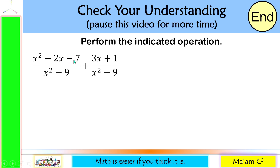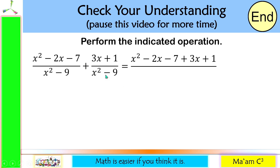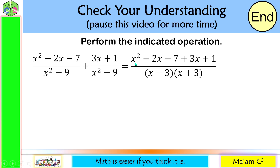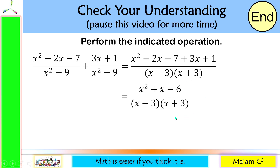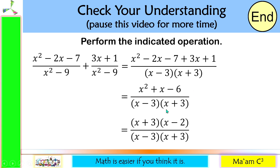We have (x² minus 2x minus 7) over (x² minus 9) plus (3x + 1) over (x² minus 9). Let us add our numerators, and note that the denominator is a difference of two squares, with factors (x minus 3)(x + 3). Adding the numerators: x², then negative 2x plus 3x is positive x, and negative 7 plus 1 is negative 6. The numerator x² + x minus 6 is a trinomial where a equals 1, and its factors are (x + 3)(x minus 2). We found a common factor (x + 3) — cancel them. Our final answer is (x minus 2) over (x minus 3).